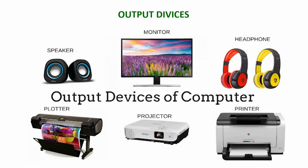Output devices are those devices that give us the results from our computer. Examples include the monitor, which is the main output device you use to see what you are doing with the computer; speakers, which produce the sounds the computer makes; headphones, which you listen to on your ears; and plotters, projectors, and printers. All of these are examples of output devices.